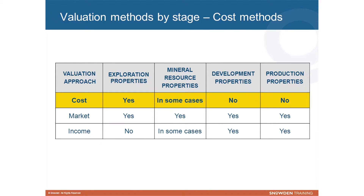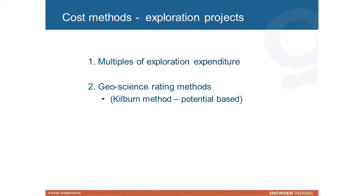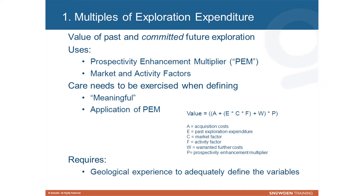Looking at some of these techniques in detail, there are what's called cost methods for application to early stage exploration projects. Two techniques that are commonly used: multiples of exploration expenditure and the Kilburn or geoscientific rating method. The multiples of exploration expenditure technique looks at the value of past and committed future exploration. This number is modified by the geologist's subjective view of whether this exploration expenditure has led to an increase or decrease in the value of the project.